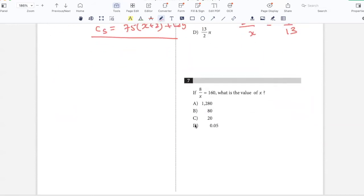If 8 by X equals 160, what is the value of X? 8 by X equals 160, so X equals 8 by 160, which is 1 by 20, so that's 0.05. Option D.